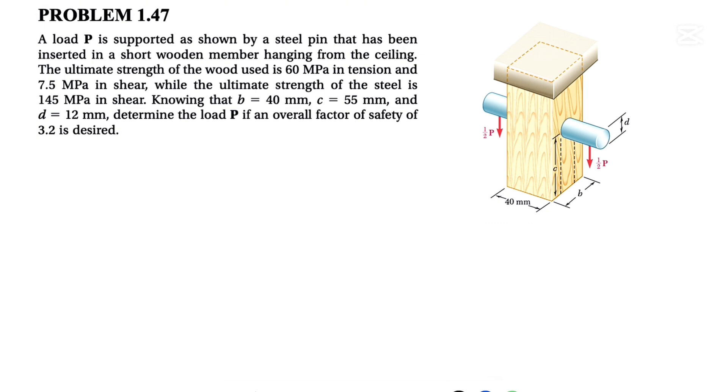We have the ultimate strength of the wood: 60 megapascals in tension and 7.5 megapascals in shear. The ultimate strength of this steel is 145 megapascals in shear.